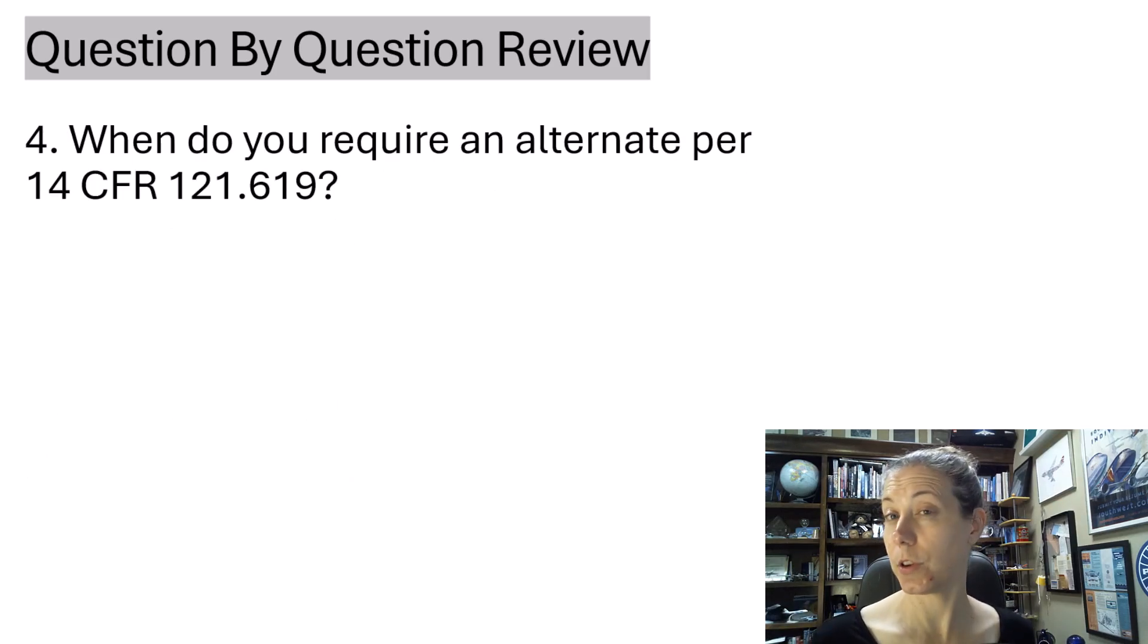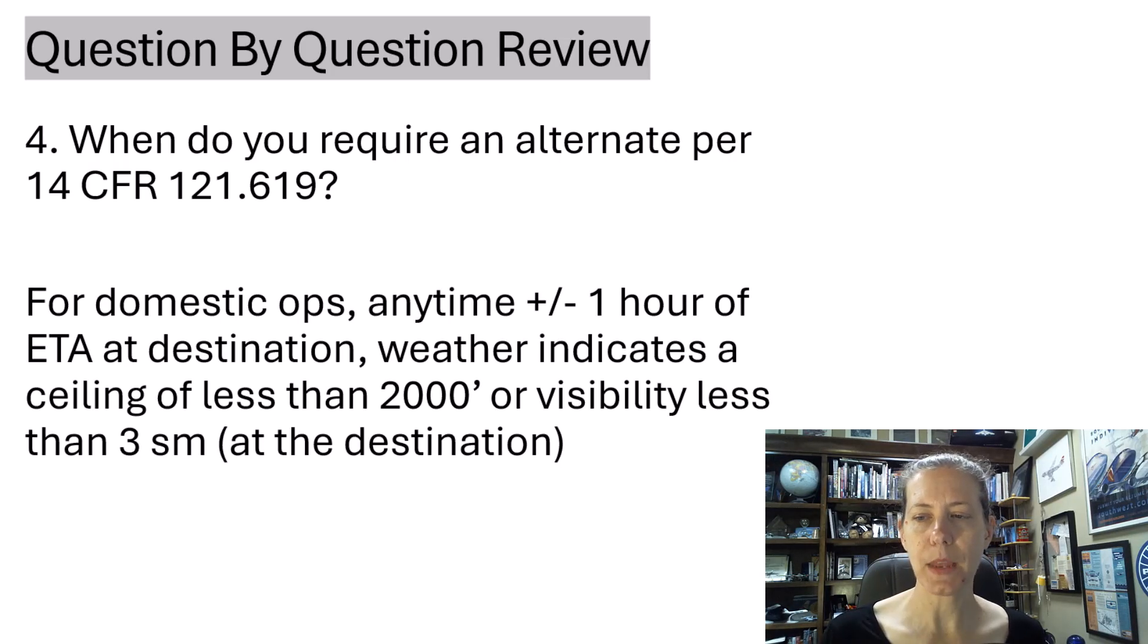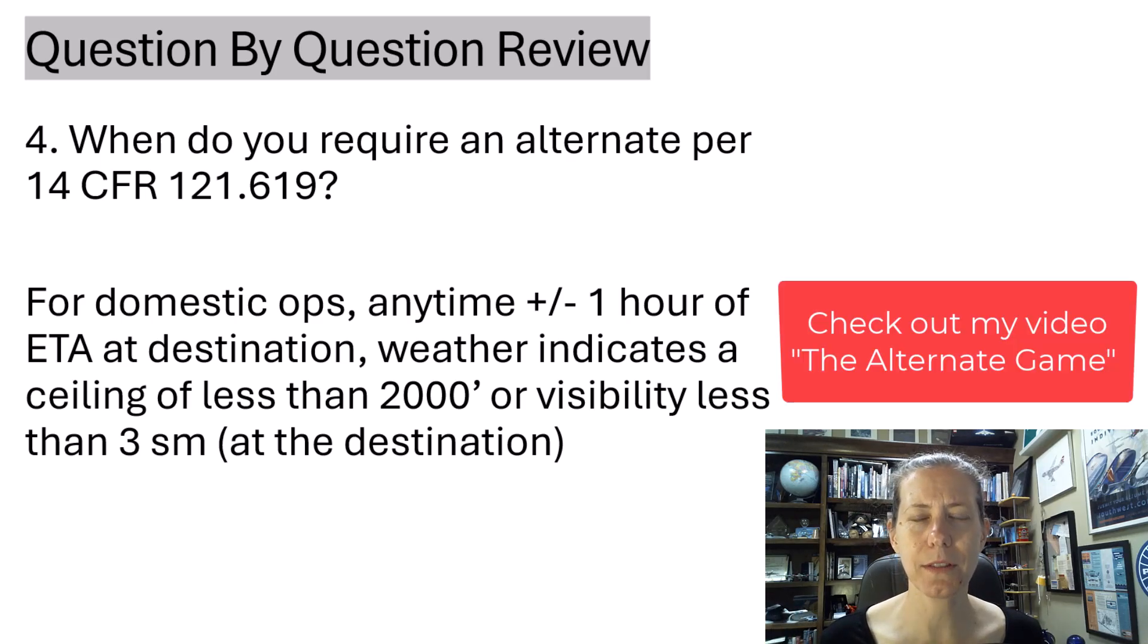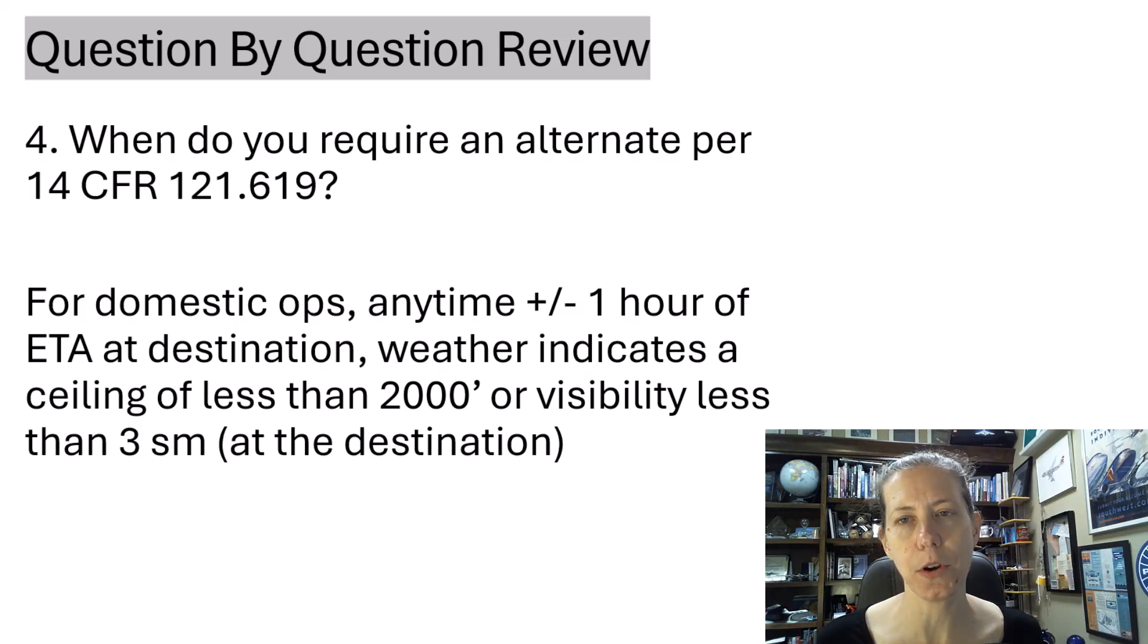When do you require an alternate, 121.619? Again, slightly interesting question because I really was like, is 121.619 domestic, flag, or supplemental? Turns out it is domestic. So for domestic operations, anytime plus or minus an hour of your ETA at the destination, if the weather indicated has a ceiling of less than 2,000 feet or visibility less than three statute miles at your destination, then you need an alternate, commonly known as the 123 rule. I have a really fun video called The Alternate Game where we go through this and I will link to that in the video description so you can practice with some real weather from a TAF.